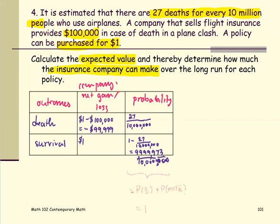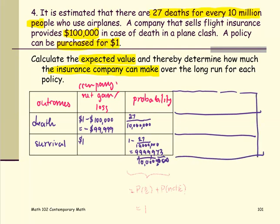To compute the expected value, we are going to find the product of the outcome and the probability, so I'm going to add another column next to it. This column is the product of the net gain or loss value and the probability of each outcome.